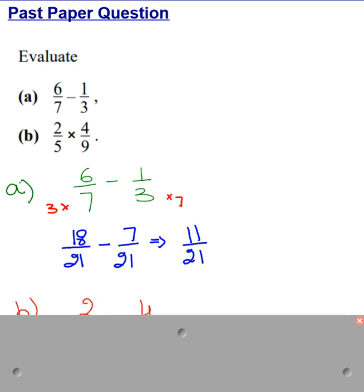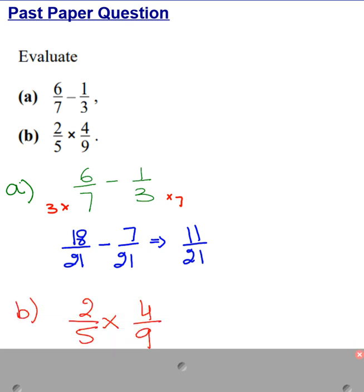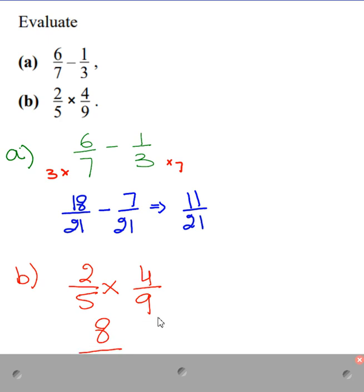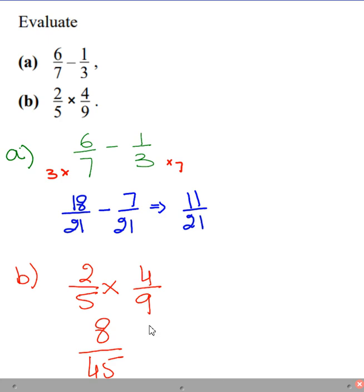Whenever there is plus or minus, take LCM. Sometimes students make a mistake, and what is the mistake? When there is multiplication between the two fractions, even in that case they take LCM by mistake. Don't do that. LCM is taken only and only when there is plus or minus between the terms. So in this case it will be simple multiplication, 8 upon 45.